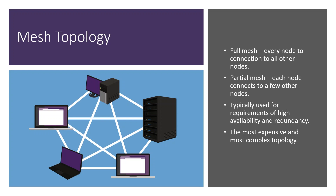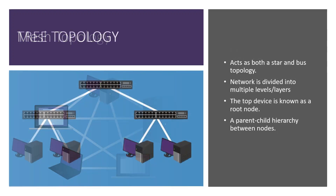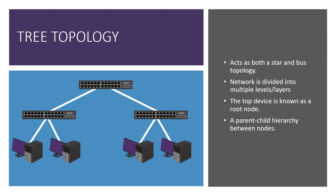The mesh topology is going to be the most expensive and most complex topology. Our next one is the tree topology, which is actually a combination of both the star and the bus topology. The network is divided into multiple layers — your top device is known as the root node, and everything connects down from there. Each level after that is considered a different level or layer.